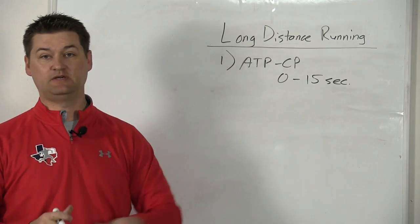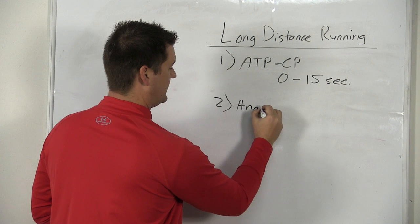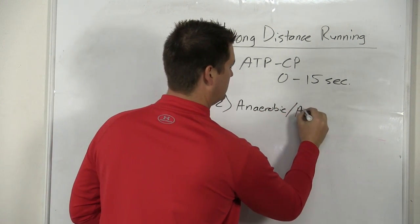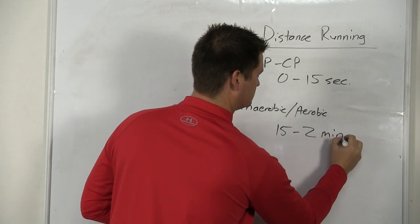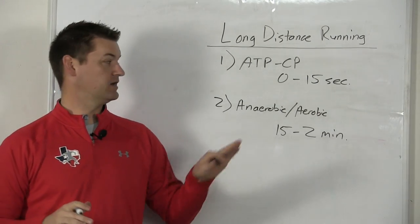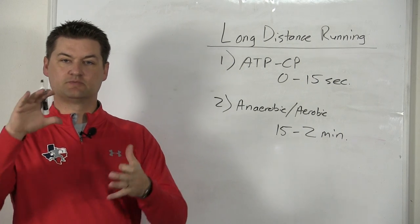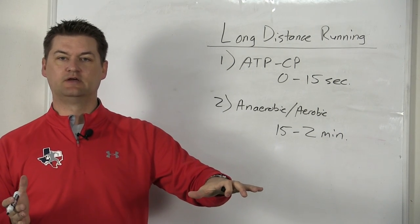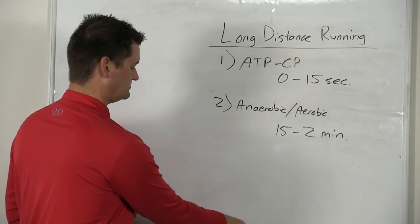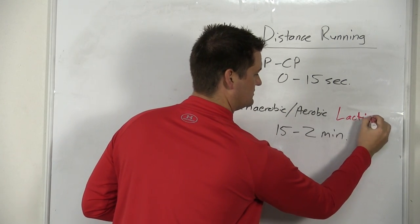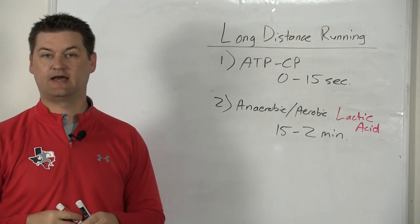The second energy system that we have is anaerobic aerobic for short. And this one lasts from about 15 seconds to two minutes. Now, this is where as you're doing something in the ATP system and you go beyond 15 seconds or so, your body just kind of automatically transitions into this other energy system of anaerobic aerobic. It's at this system where lactic acid is produced. This is the energy system that lactic acid is produced.